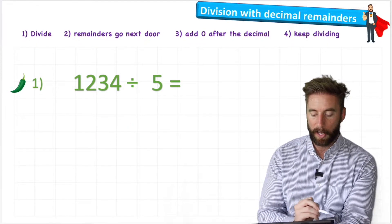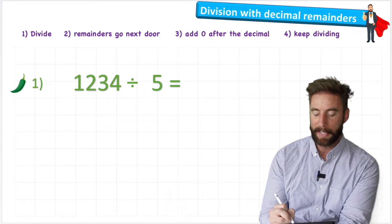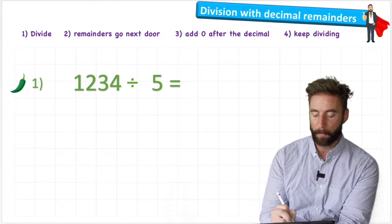So let's have a look what that looks like with question one. So question one says 1,234 divided by five. So let's put it inside the bus stop. There we go.